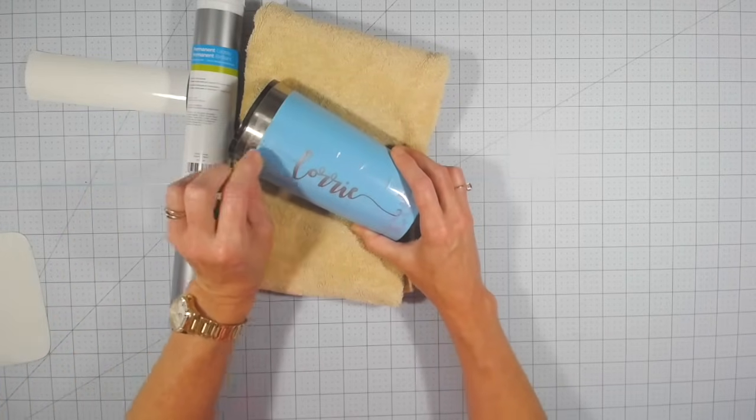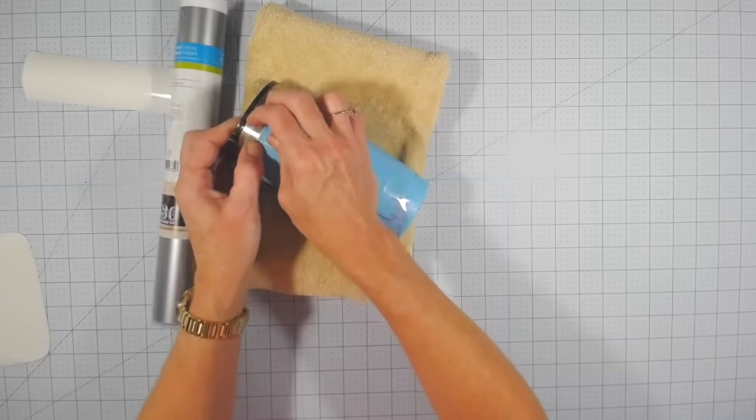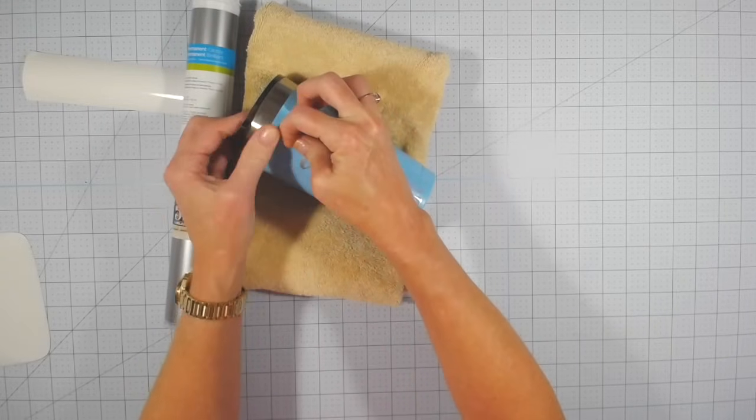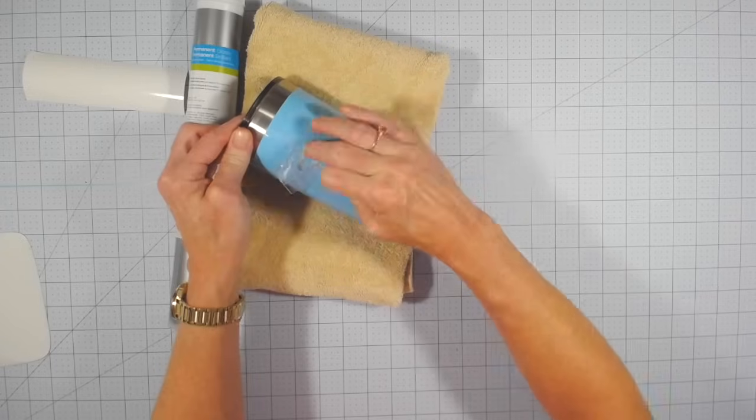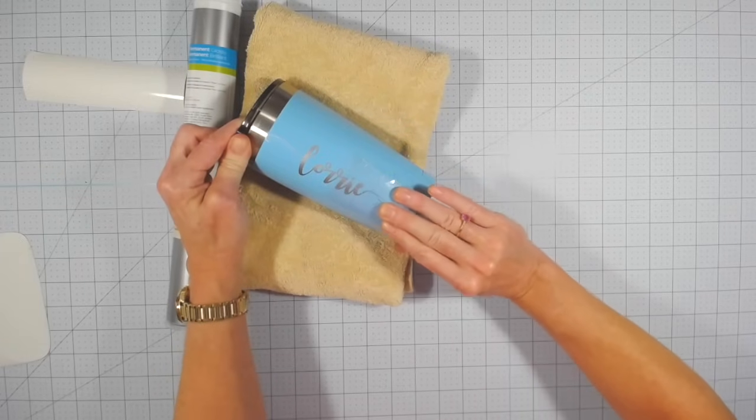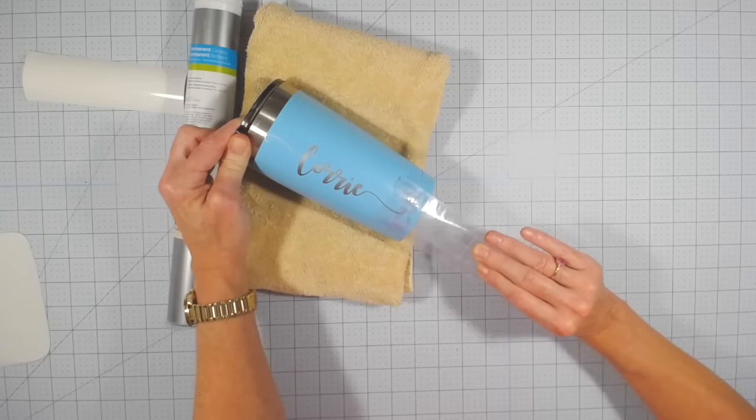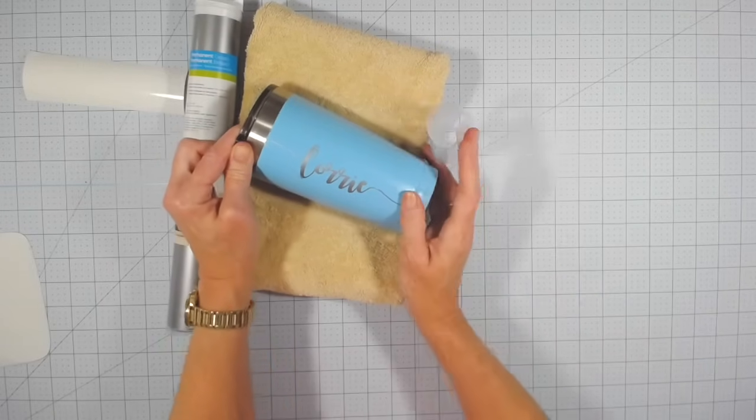Now this is where I find it really easy just to keep that transfer tape low and roll it back on itself just like I'm doing here. I'm keeping it low next to the tumbler and just pulling it straight back. And that's it.